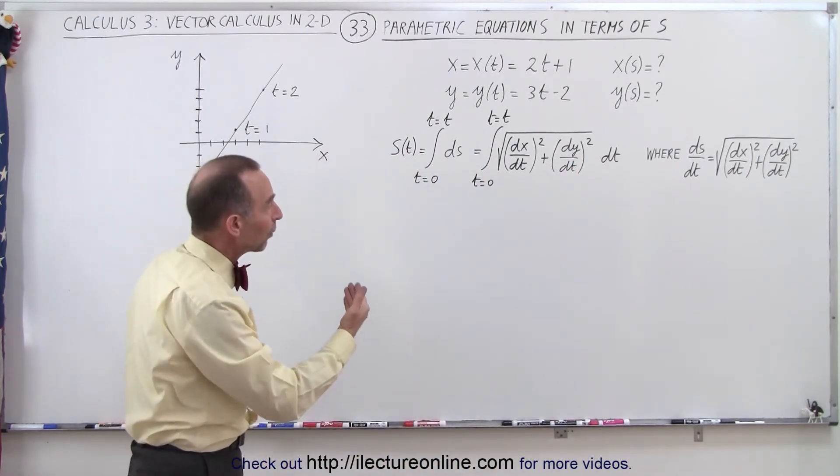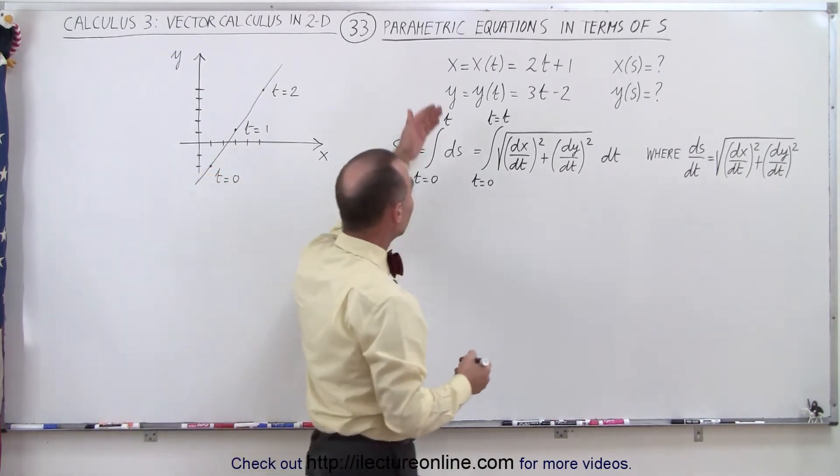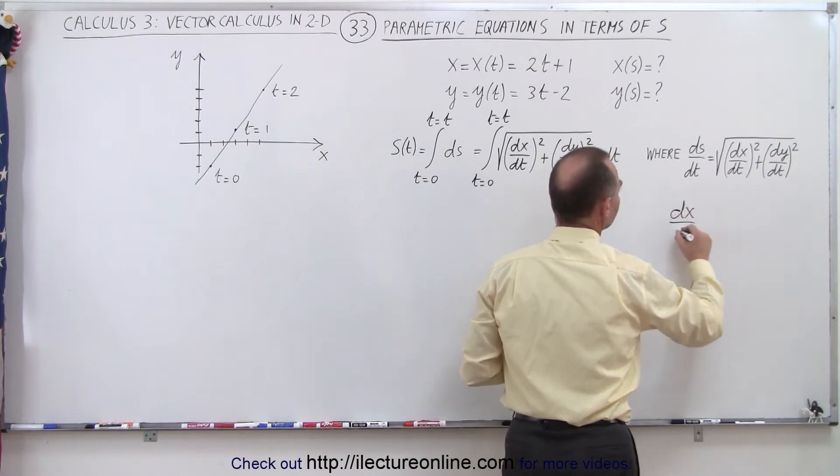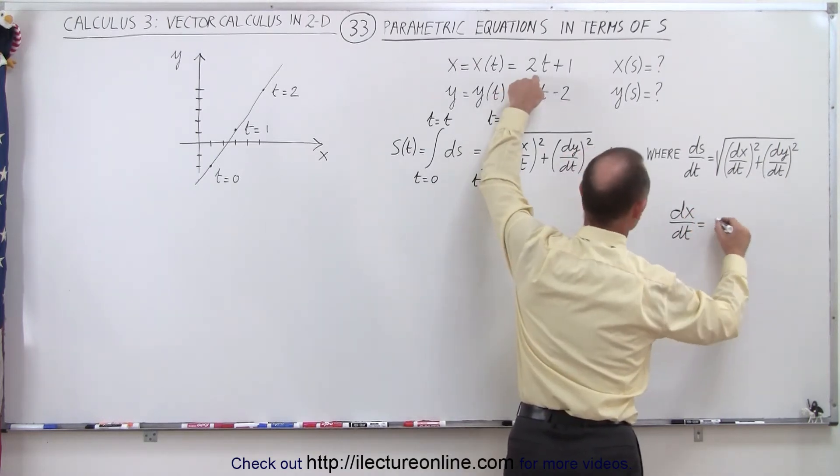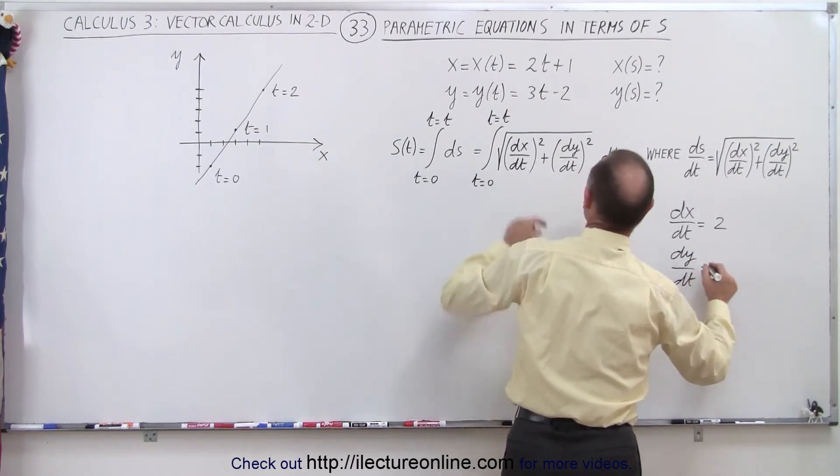So now what we need to do is find out what dx/dt is equal to and what dy/dt is equal to based upon what we have over here. So in this case, dx/dt is going to be equal to 2 and dy/dt is going to be equal to 3.